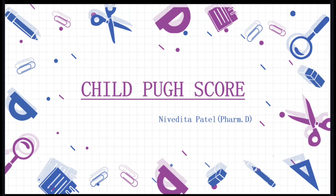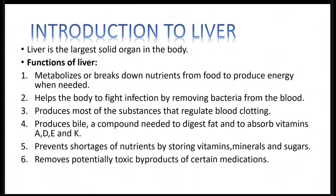Before starting about the Child-Pugh score, let us discuss about the liver in brief. The liver is the largest solid organ in the body and has a wide variety of functions. It metabolizes drugs, nutrients, fats, proteins, etc. It is also one of the important organs in maintaining immunity in our body, along with the spleen and other lymphatic tissues.